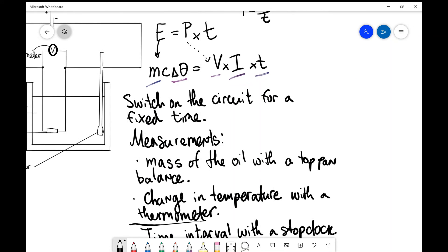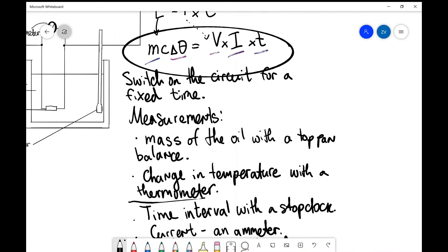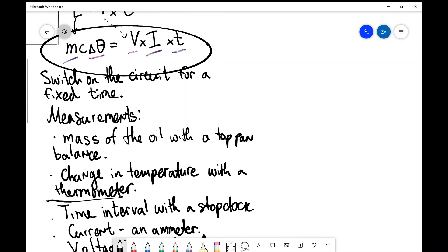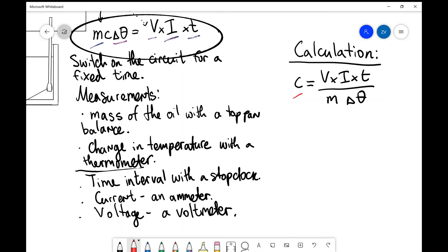If we look at the above equation, we can actually rearrange this equation. I'm going to circle this. We can rearrange this equation for c because we'll have measured everything else. Let's include that in a different section which I'm going to call calculation. So for our calculations, what we need to do is rearrange the above equation for c, so I'm going to do that quite carefully. So c is equal to V times I times t, and we're going to divide this by m∆θ. So now we have a method for calculating the specific heat capacity of the cooking oil.